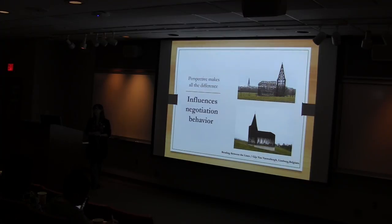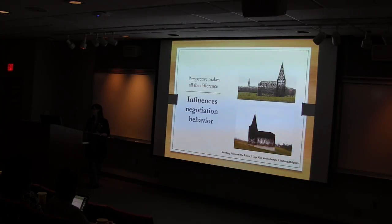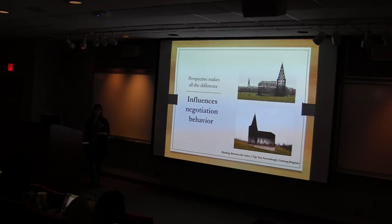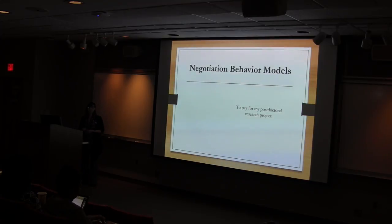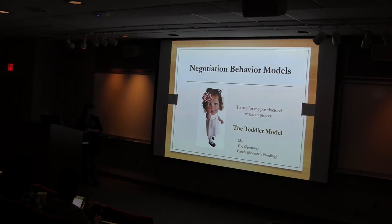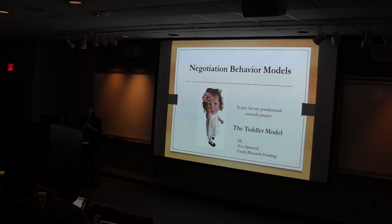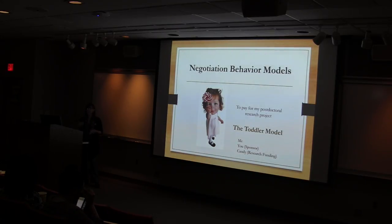Why is it important to think about this perspective? The perspective you bring influences your negotiation behavior — how you approach the discussion on paper, because that's all you get to do. You don't get to go into a room and have a conversation with people making decisions about whether to fund you. You have to explain it all on paper to an objective audience. If you enter this endeavor thinking the F32 is to fund your research project, you use what I call the toddler model of negotiation: 'I see that you have candy, I would like to have that candy, and I'm a very deserving person.' You've got yourself, the sponsor (NIH), and the candy — those are the only things you talk about.